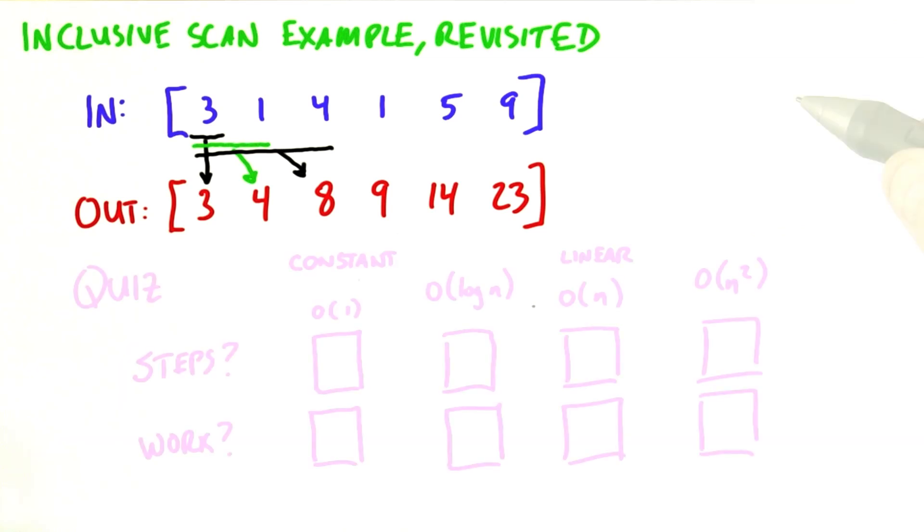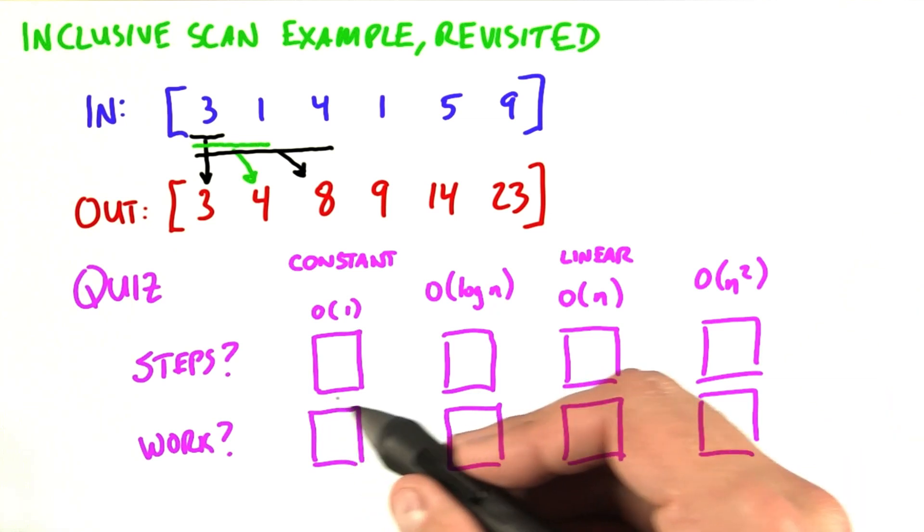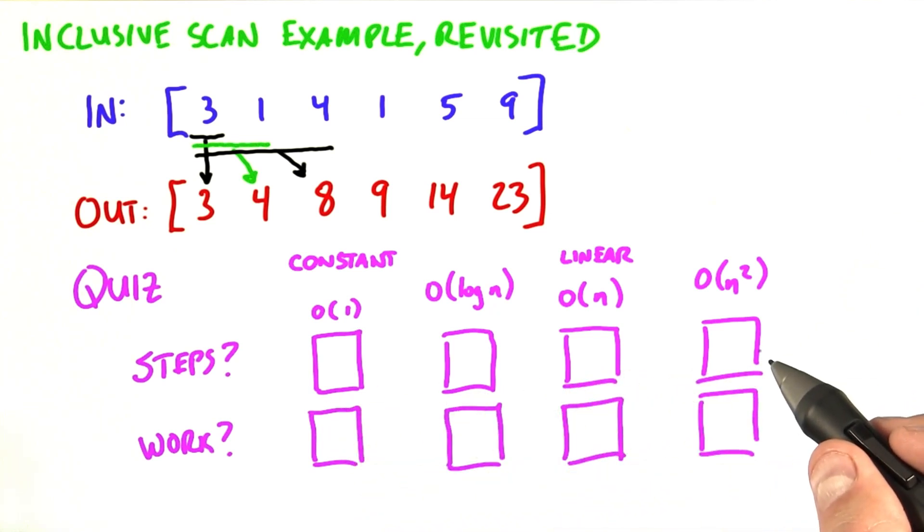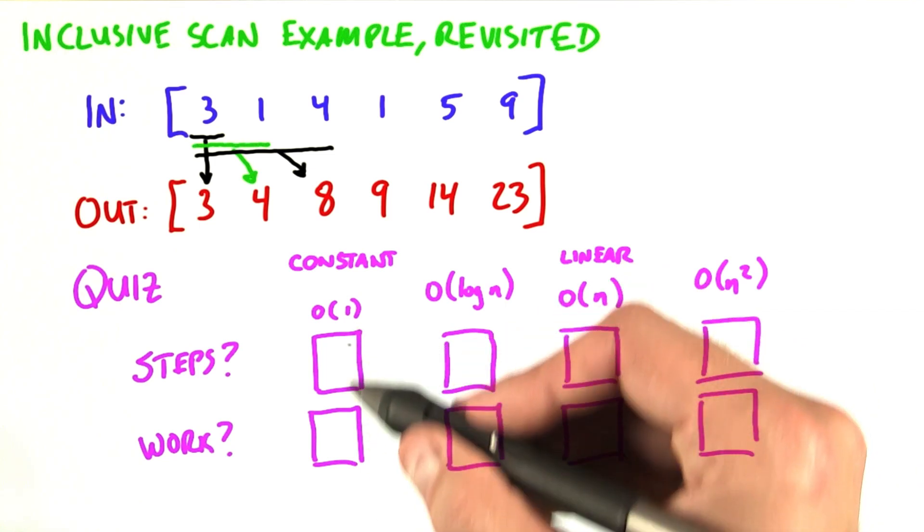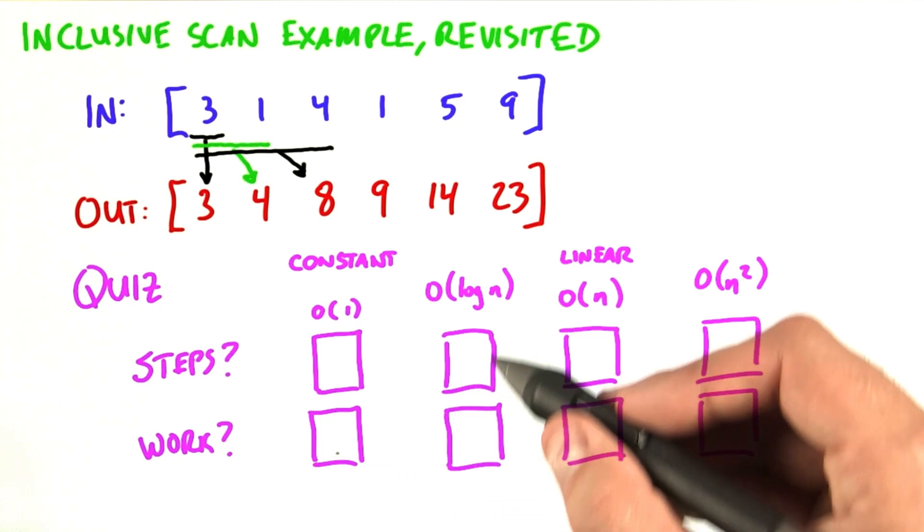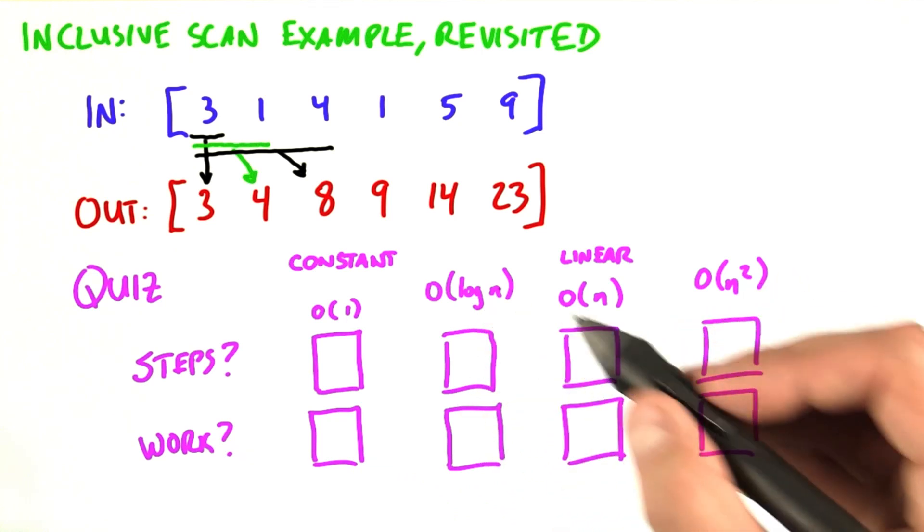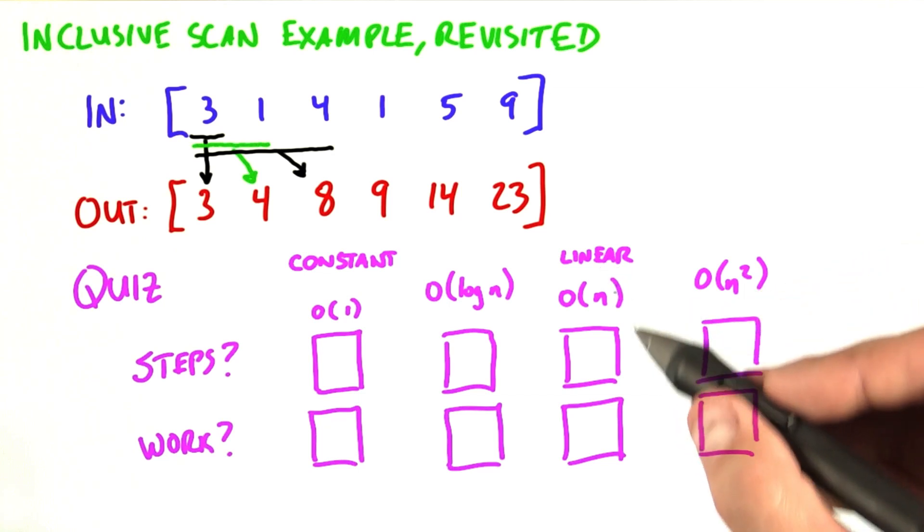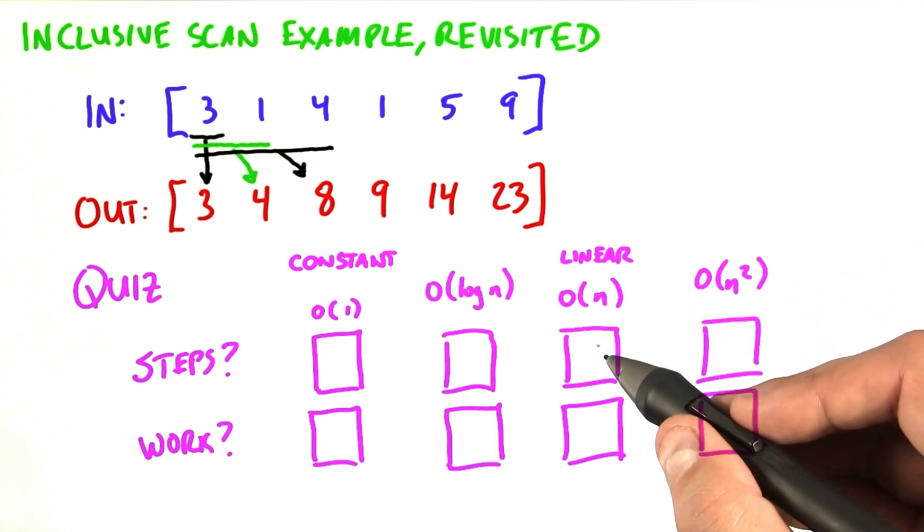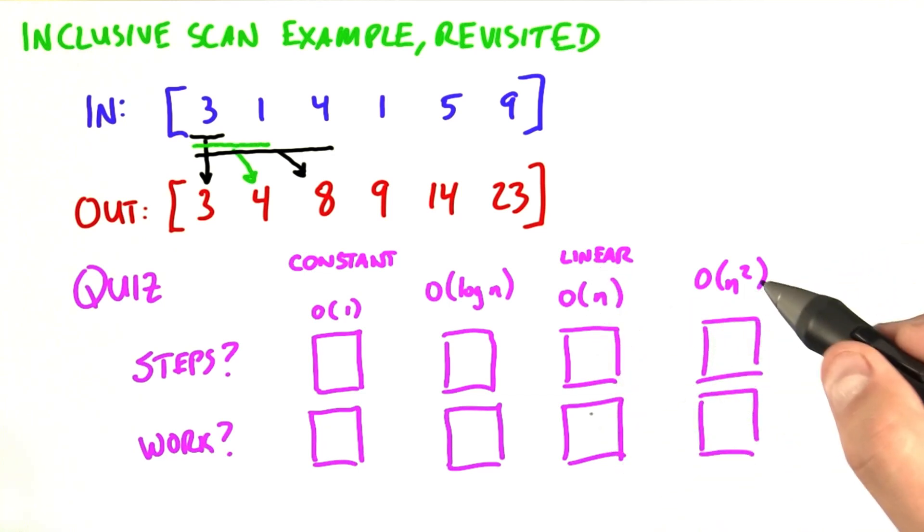So let's take a quiz on this. As a function of n, how many steps is it going to take to scan in this way with n reductions, and how much work is it going to take overall? And our choices are constant amount of steps or work, amount of steps or work proportional to the logarithm of the size of the input, a linear relationship between the size of the input and the number of steps or the amount of work, and a quadratic relationship between the size of the input and the number of steps and the amount of work.